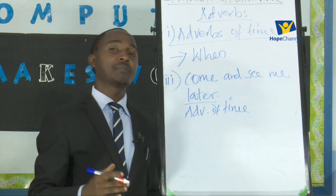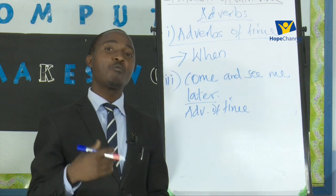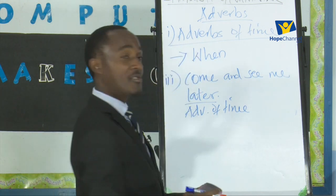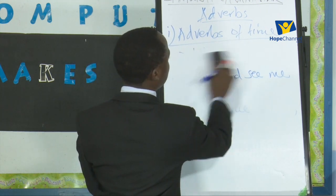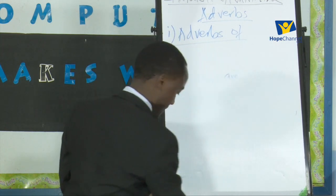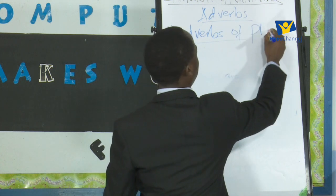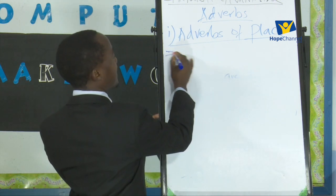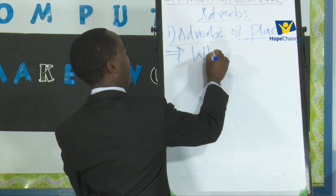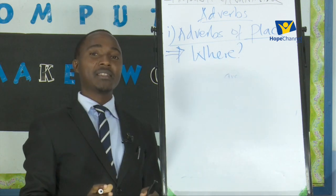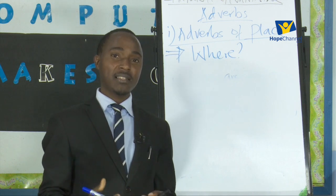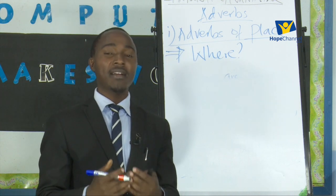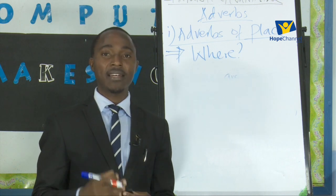Remember, adverbs of time answer the question 'when' — when did the action take place, when will it take place, or when has it taken place? We go to the second type of adverbs: adverbs of place. These adverbs answer one question: where? Whenever you have adverbs in a sentence, ask yourself 'where?' — and if a word answers that question, you have an adverb of place.